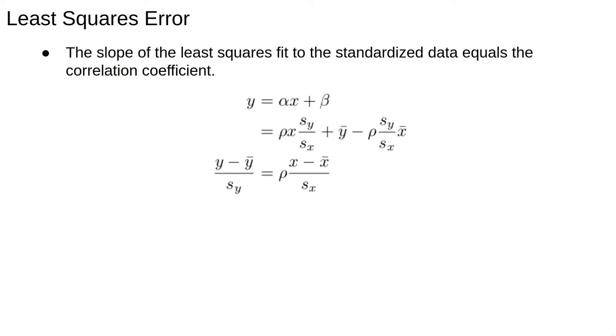The correlation coefficient quantifies the strength of the linear relationship, that is, how much like a line the data is. It applies to the standardized data. The slope tells us how much we expect y to increase for any given change in x. It applies to the raw data.